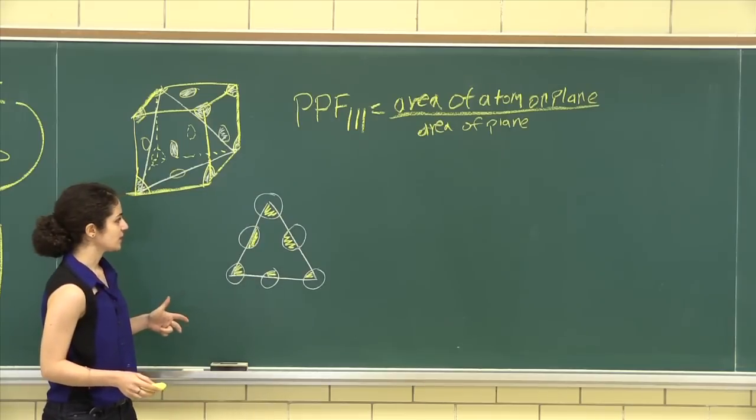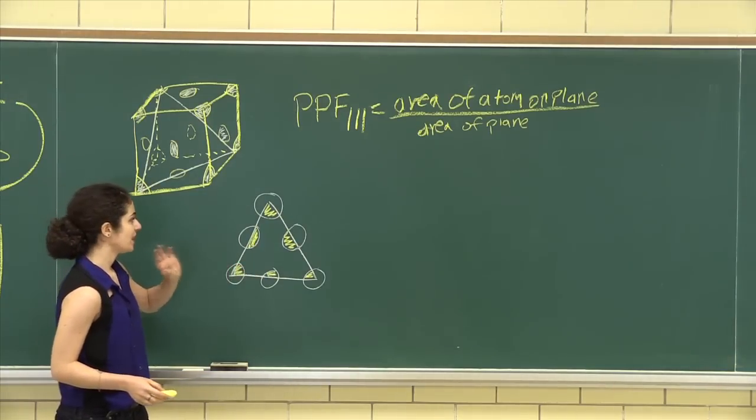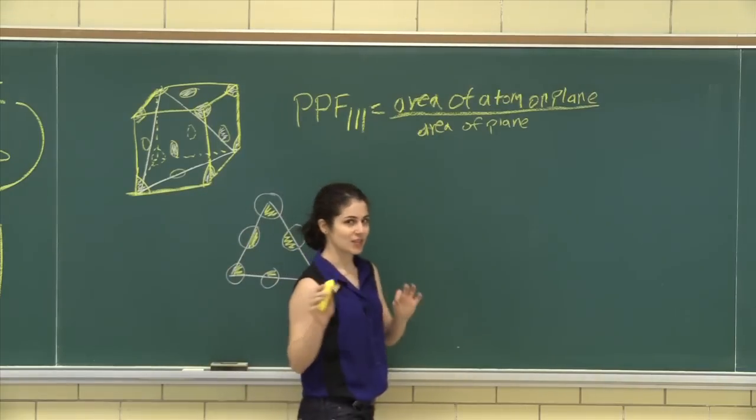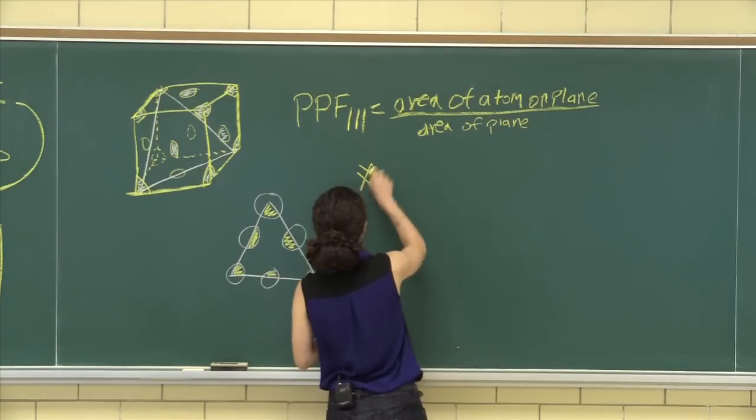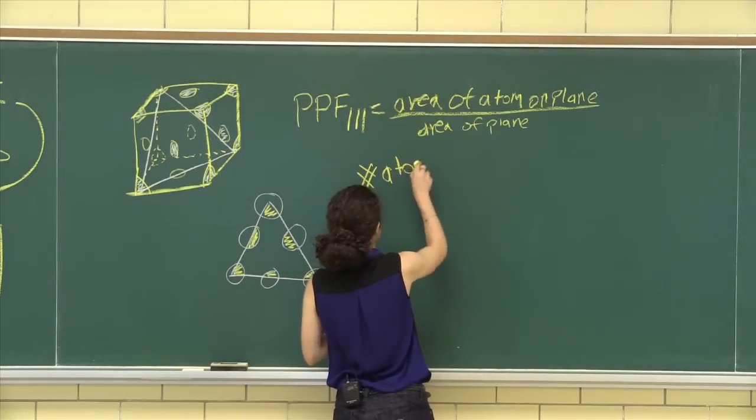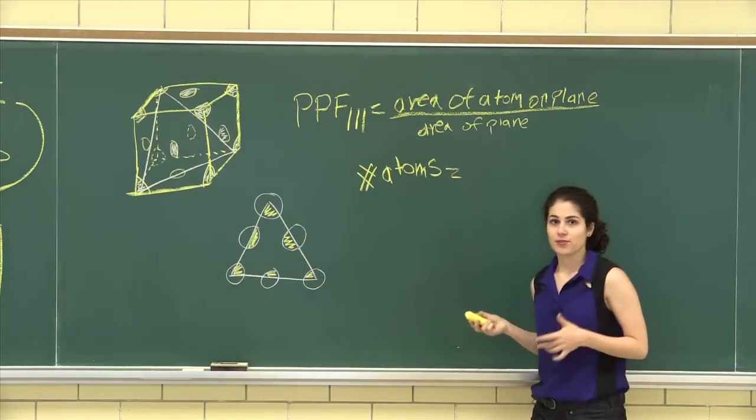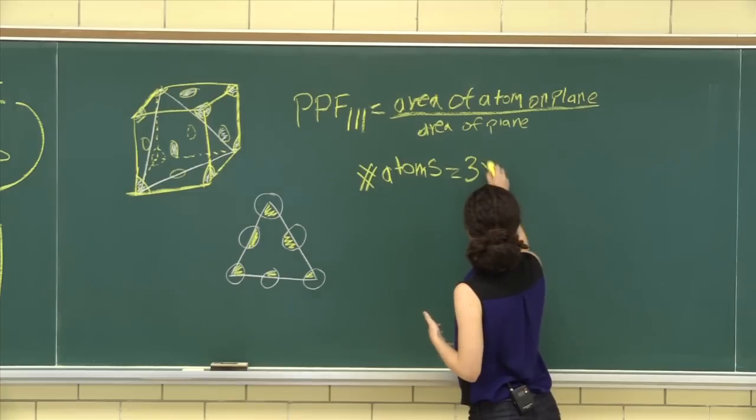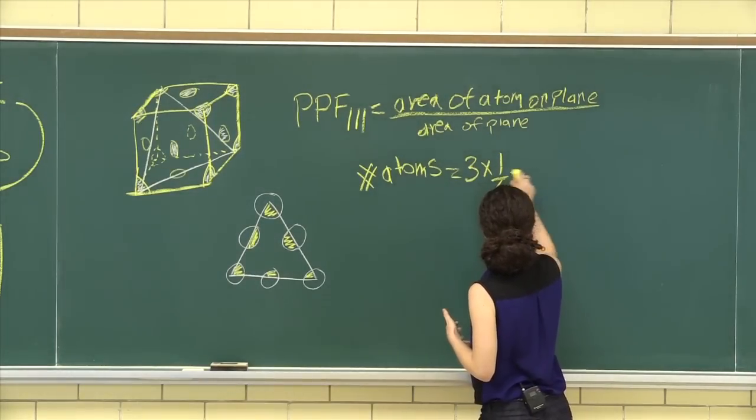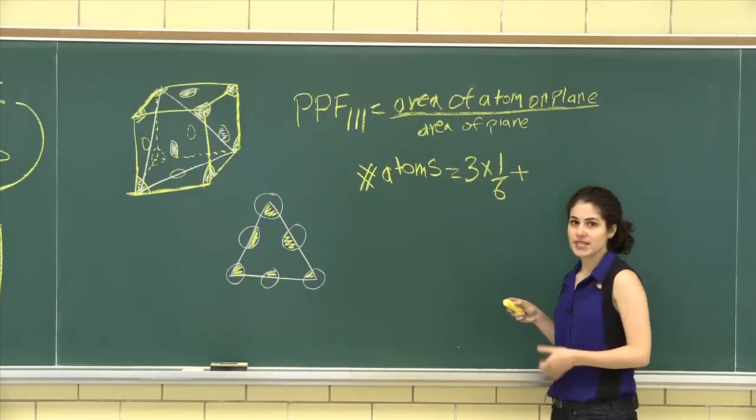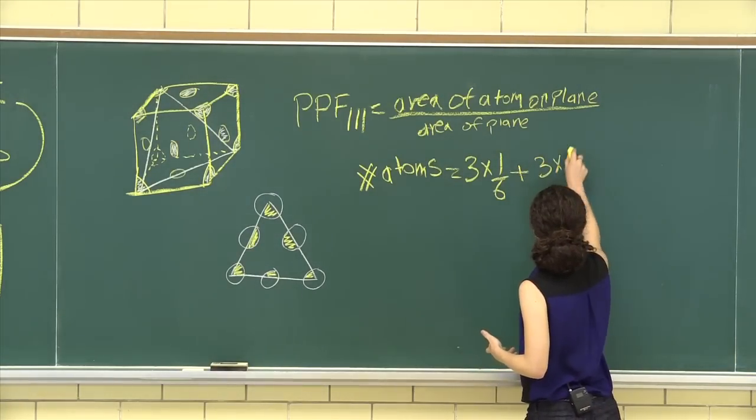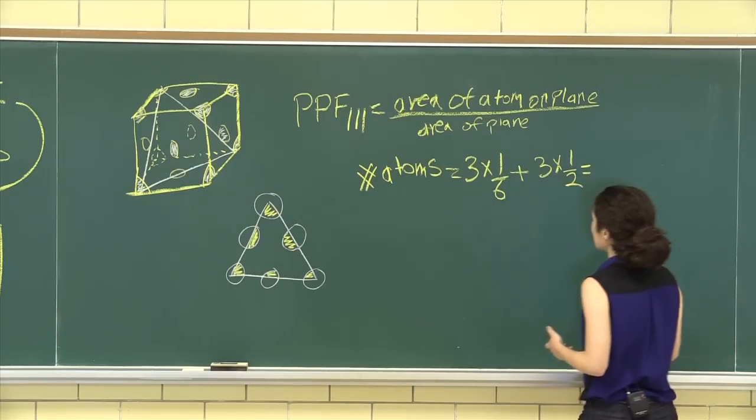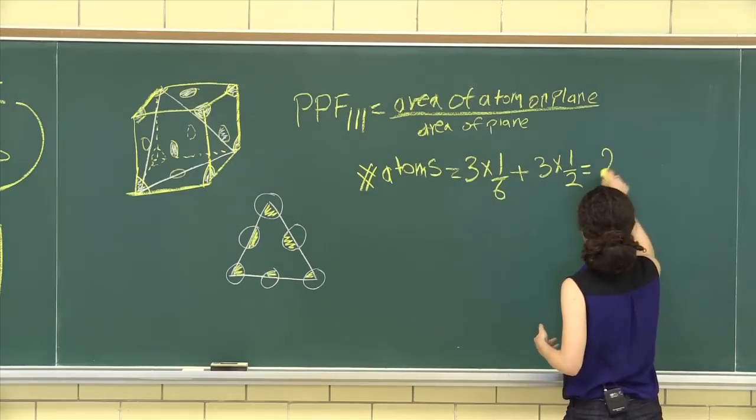So first things first, this is a reduced sphere model. Second thing, let's try to calculate the number of atoms. We have three times a sixth of an atom plus three times half of an atom. This gives us two atoms.